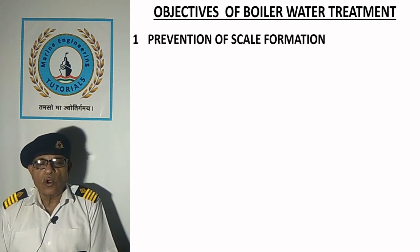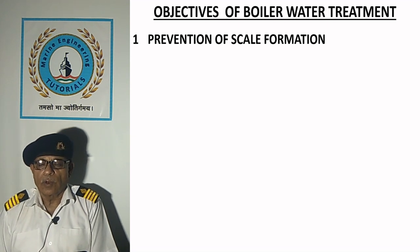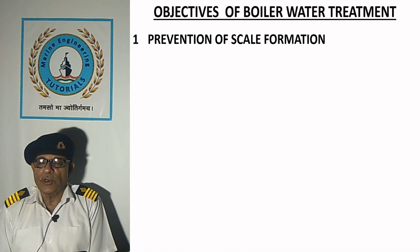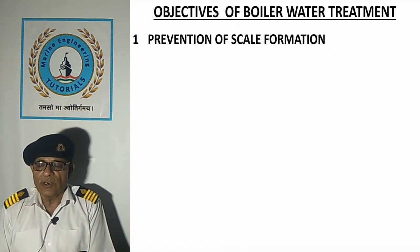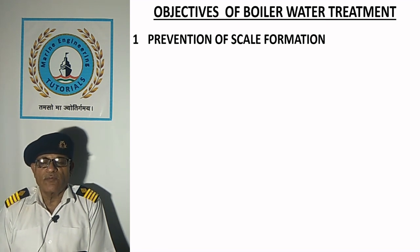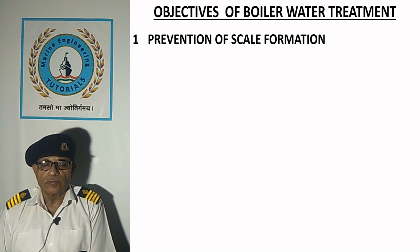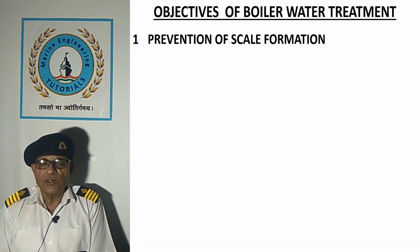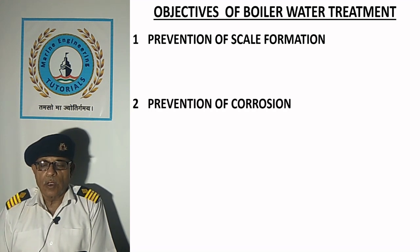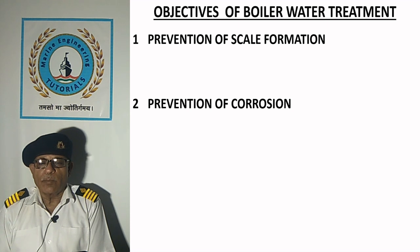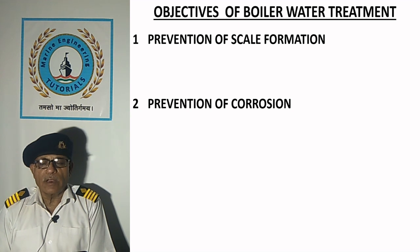First is prevention of scale formation — prevention of scale formation in the boiler and feed system by using distilled water or precipitating all scale-forming salts into non-adherent sludge. Second is prevention of corrosion — prevention of corrosion in the boiler and feed system by maintaining the boiler water in an alkaline condition, free from dissolved gases.